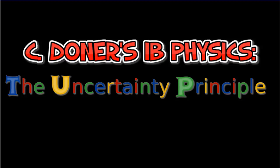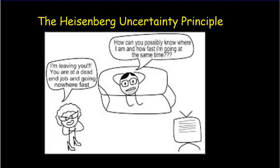Let's have a look at the Heisenberg Uncertainty Principle. You've probably heard a little bit about it. It has something to do with it being impossible to know exactly where an electron is at the same time as you know its exact momentum. It's impossible to know both of those precisely at the same time.